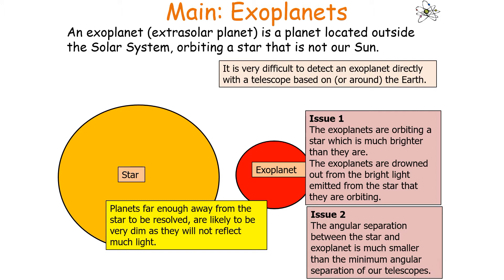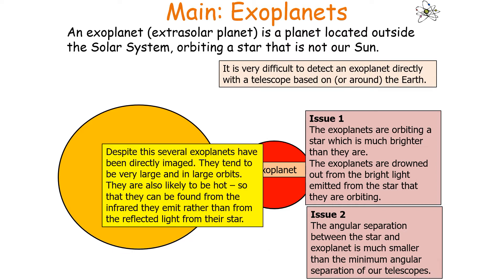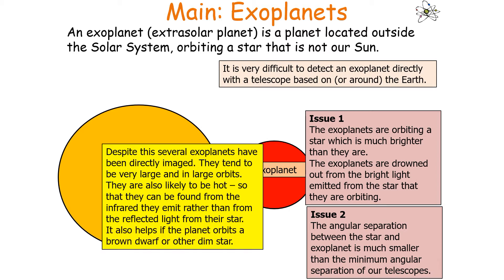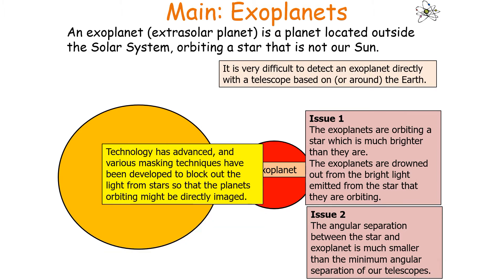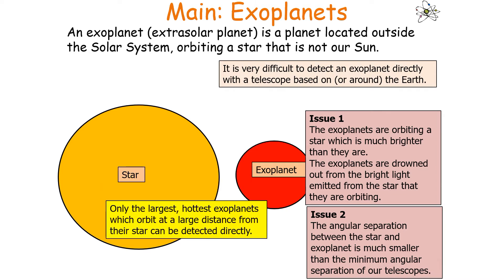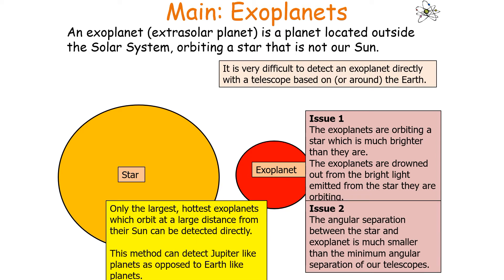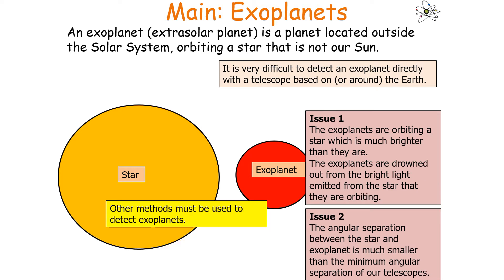Despite these issues, several exoplanets have been directly imaged. They tend to be very large, in large orbits, and are likely to be hot, so they can be found from the infrared they emit rather than from reflected light. It also helps if the planet orbits a brown dwarf or another dim star. Technology has advanced and masking techniques have been developed to block out light from stars, but still only the largest, hottest exoplanets which orbit at a large distance from their star can be detected directly — Jupiter-like planets as opposed to Earth-like planets.